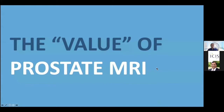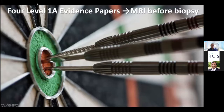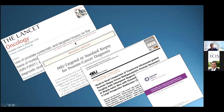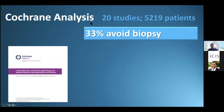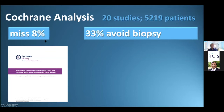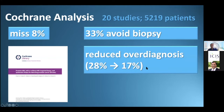What is the value of prostate MRI? There are four level-1A evidence papers showing that prostate MRI has high value if performed prior to any biopsy — published in Lancet, New England Journal, European Urology, and a Cochrane meta-analysis. The Cochrane analysis of over 20 studies and more than 5,000 papers shows that with multiparametric MRI, a negative MRI can avoid biopsy in one-third of patients, at the cost of missing 8% of significant cancers, and reduces overdiagnosis from 28% to 17%.